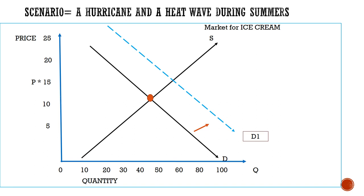On the other hand, there is a hurricane as well. The hurricane destroys the crops — specifically, it has destroyed the sugar crops. Sugar is an important input to produce ice cream. When the price of any key resource rises, it affects the cost of production. It would be expensive for sellers to produce ice cream, so they would choose to decrease their supply, and the supply curve moves towards the left. Now we have a new equilibrium where the new demand and new supply curve intersect. There is a significant rise in prices from the previous equilibrium to the new equilibrium, but only a slight change in quantity.